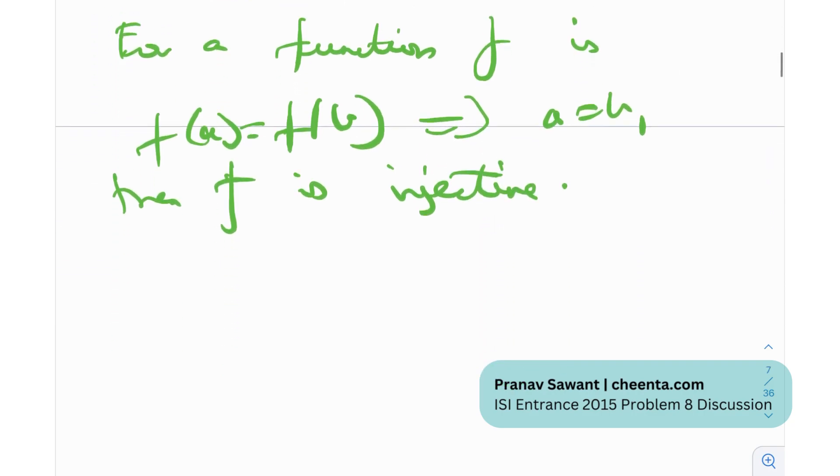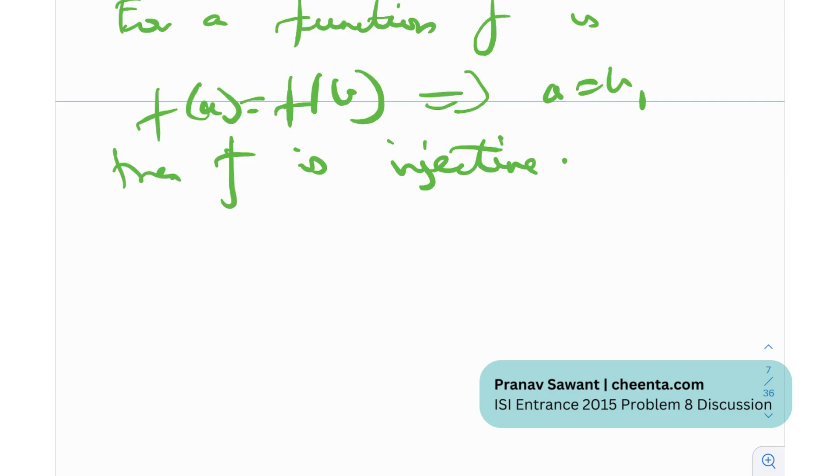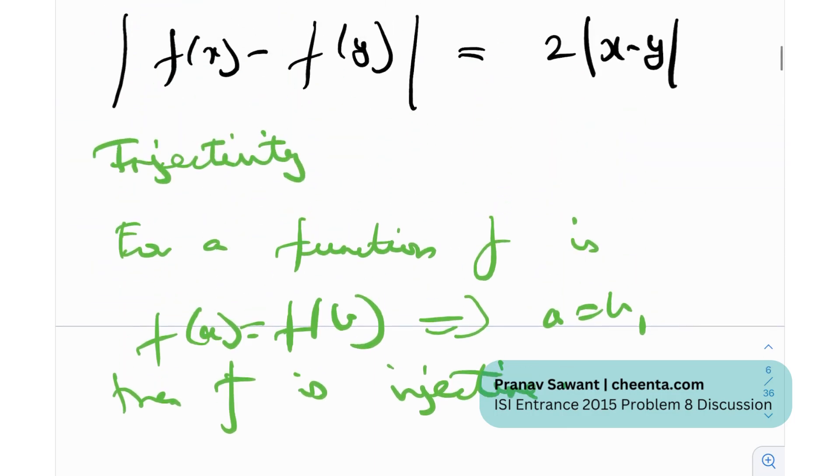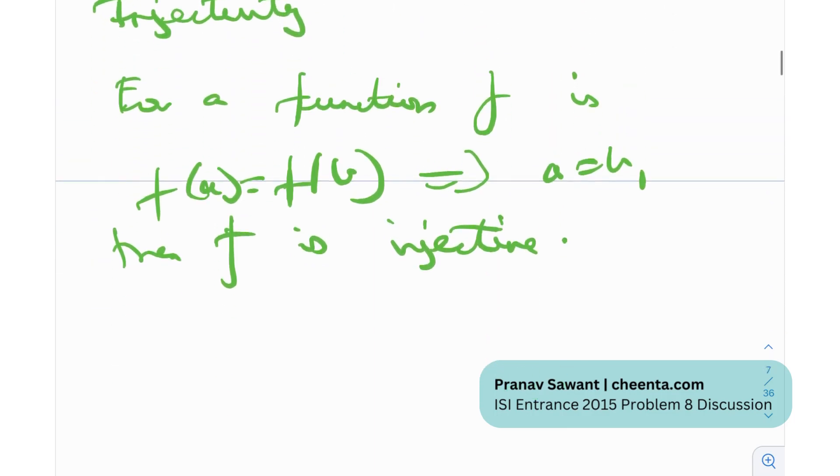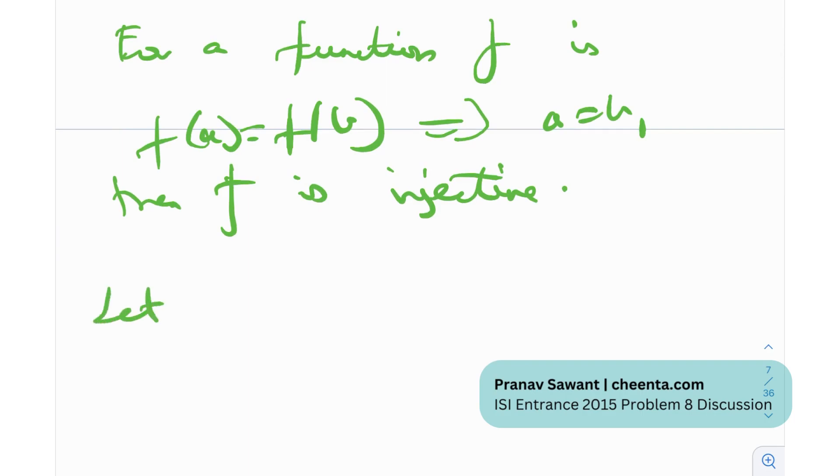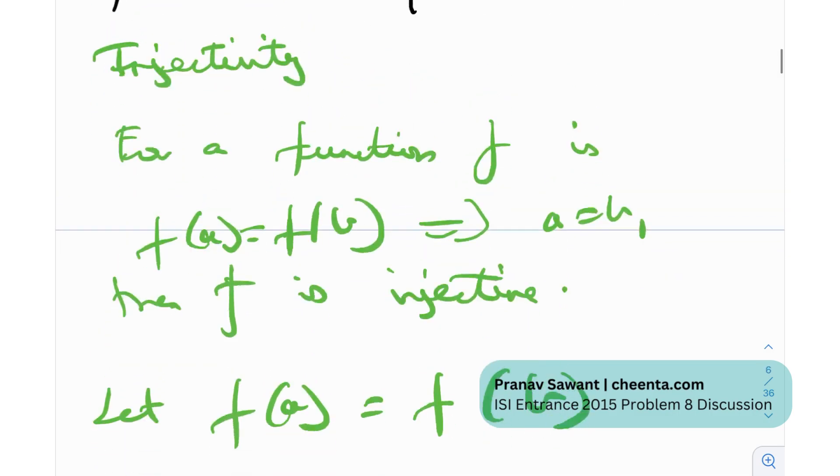So, for any function in general, if f(a) is equal to f(b), and that necessarily implies that a is equal to b, then f is said to be injective, one-to-one. So let's try to maybe prove a little bit of injectivity over here. So here what I'm going to do is I'm going to let f(a) equal f(b). And after I take this assumption, if I'm able to conclude that a is equal to b, then f is obviously injective.